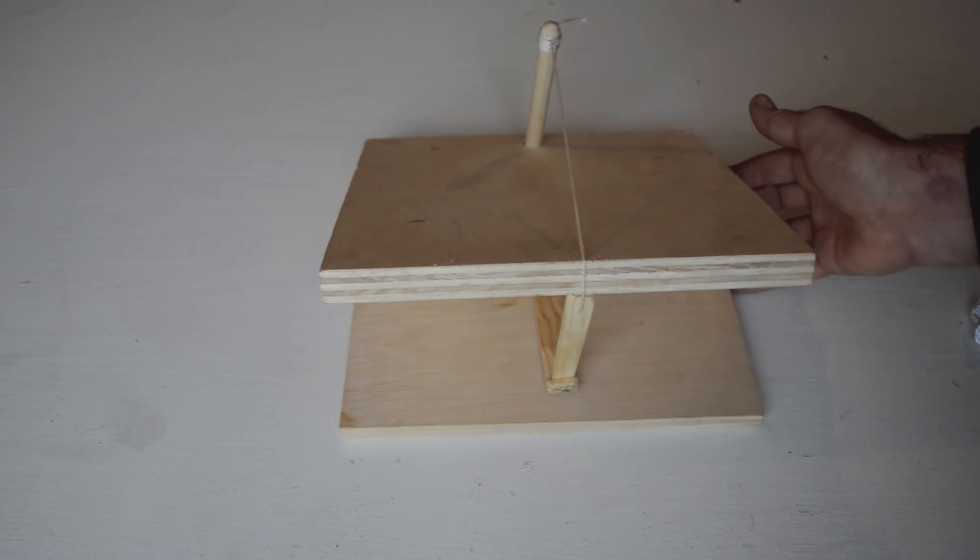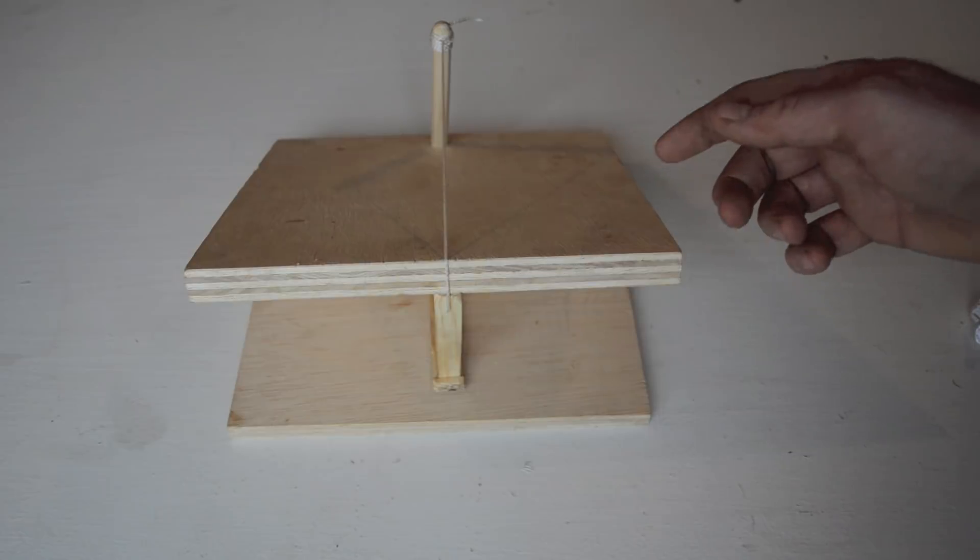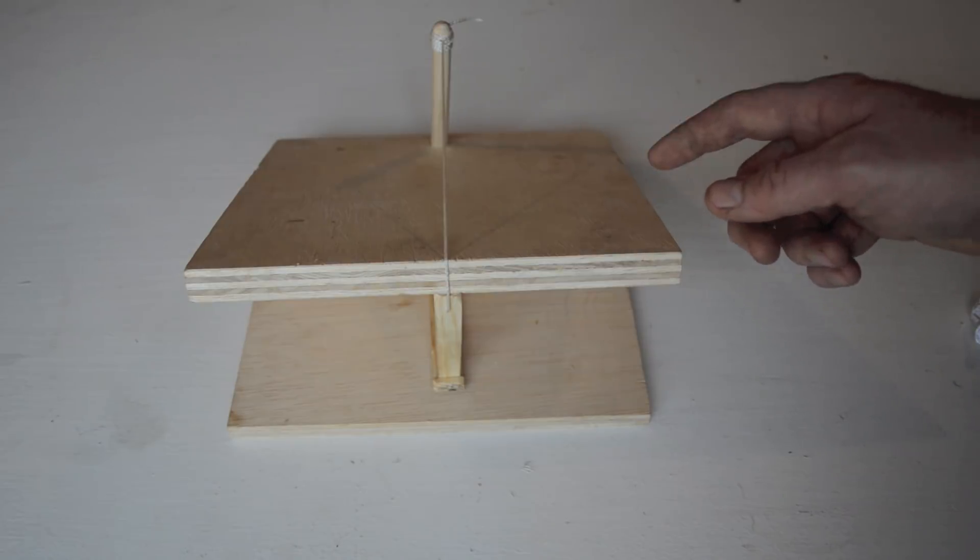In that book, he describes different traps for various sized animals: wolves, vultures, polecats, and smaller animals. I've been recreating the ones for mice and rats. This is number 10, there's 12 total, so I have two more to go.